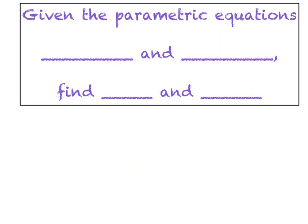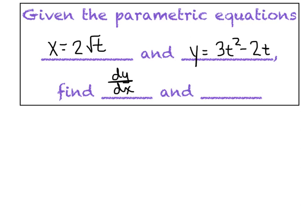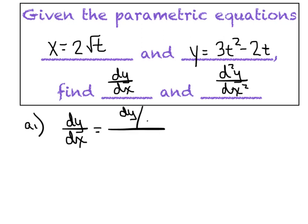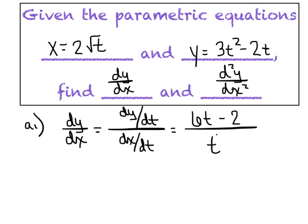Now let's look at example one, taking the parametric equations x = 2√t and y = 3t² - 2t. We want to find the first derivative dy/dx and the second derivative d²y/dx². For the slope in part a, dy/dx equals (dy/dt)/(dx/dt). The numerator is 6t - 2 and the denominator is t^(-1/2). Cleaning that up by subtracting exponents gives us 6t^(3/2) - 2t^(1/2) as the first derivative.